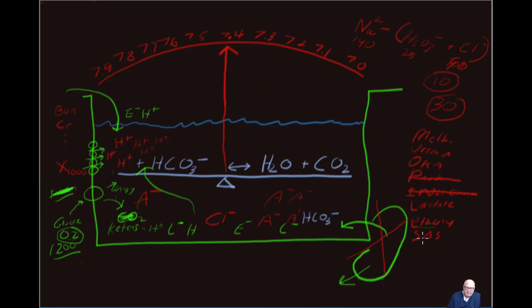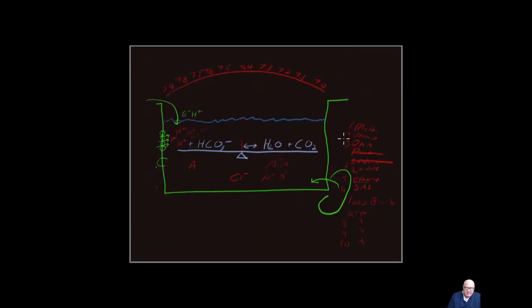Finally, salicylate — aspirin — causes a gap acidosis, but it takes a large amount with very fast metabolism. The aspirin is a negatively charged particle with a hydrogen; the hydrogen is taken away and we're left with the aspirin moiety raising the gap.